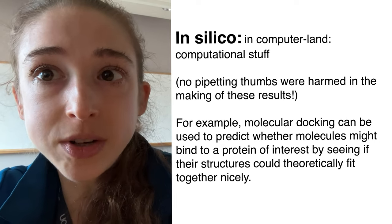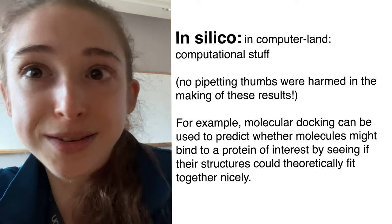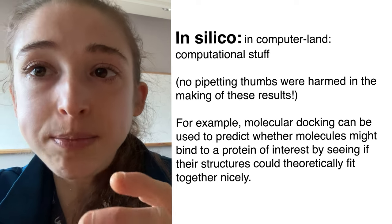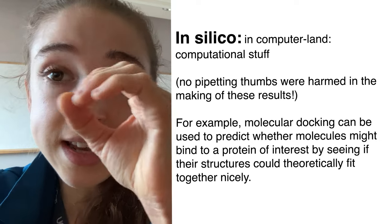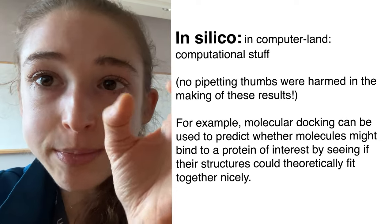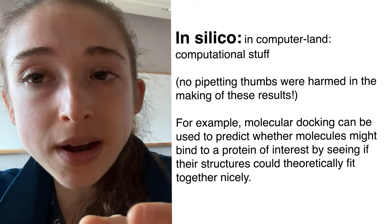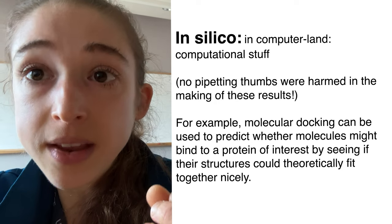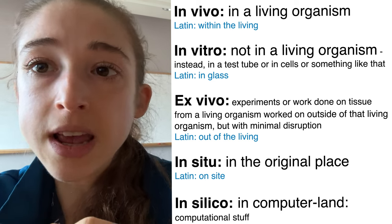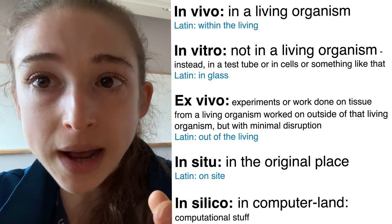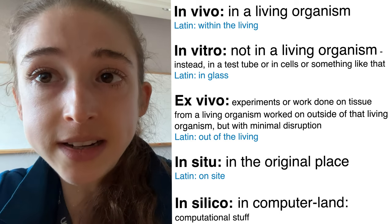Sometimes we do experiments where the only thing we're touching is a computer keyboard. In silico is the term we use when we're dealing with things in computer land. Examples include molecular docking, where you take a bunch of different drugs and see if they could theoretically bind to a protein by comparing their shapes. You're not testing if the molecules actually bind, just seeing if they theoretically could. Then you might actually go test if they bind — starting super in vitro in a test tube, mixing two components. If they bind, you might move to cell culture and see if they still bind inside those cells.